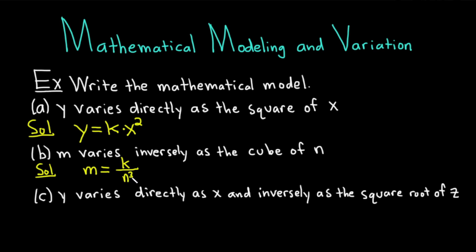So if it says directly, you multiply. If it says inversely, you divide. In part A, y varies directly as the square of x means k times x squared. In part B, m varies inversely as the cube of n means you divide by n cubed. You always put the k. K is called the constant of variation or the constant of proportionality. It has different names, but you always want to use the k.